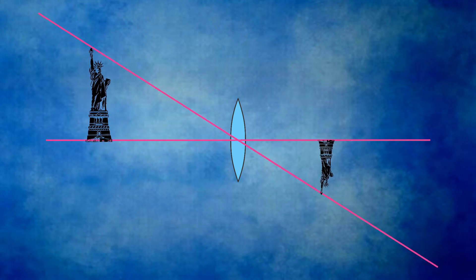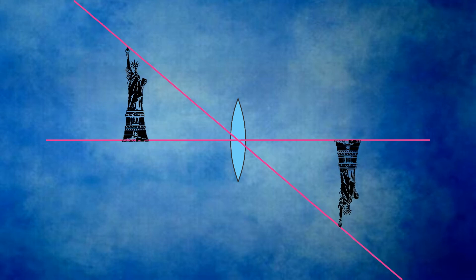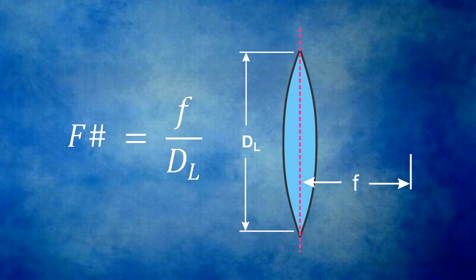Notice as the object's distance changes, the image distance must also change to maintain the object in focus. An important characteristic of the lens is the F number, denoted by capital F together with the hash or pound sign. It is an indication of how much light energy the lens can gather and provide to the image. The F number is the focal length of the lens divided by its diameter. Notice that the F number is counter-intuitive. Larger F numbers let in less light than smaller F numbers.